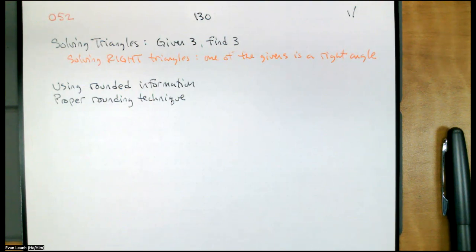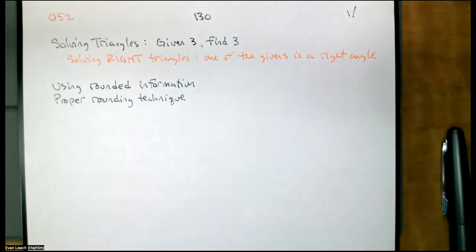The things that I want to point out today are dealing with grounded information and our proper rounding technique. The reason that this is going to be important is that sometimes we're going to want to use something that we calculated in another calculation, and that's when things get dangerous. To take a value that's been rounded and to use it in a calculation could take that rounding error and magnify it as we go along. So let's talk about proper rounding technique. Make sure the calculator is on and in degree mode.